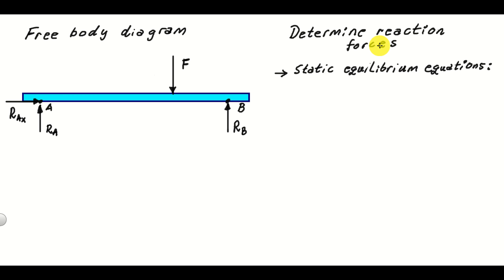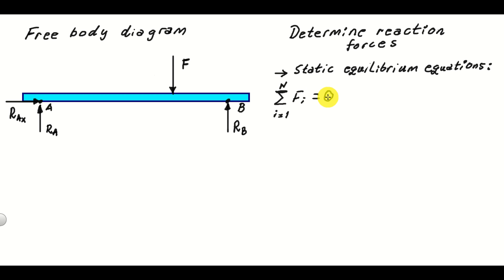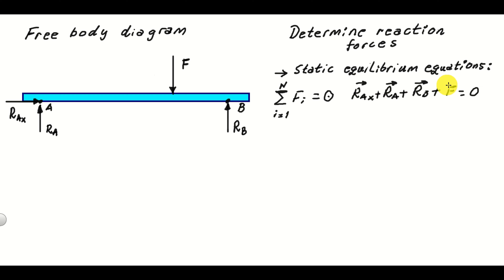The next step is to determine the reaction forces using the static equilibrium equations. The static equilibrium force equation tells us that the sum of all forces acting on the beam should be equal to zero. We write this as: sum from i=1 to N of Fi equals zero, where N is the total number of forces. So we have RAx plus RA plus RB plus F equals zero. Note that this should be a vector equation — this is very important to keep in mind.